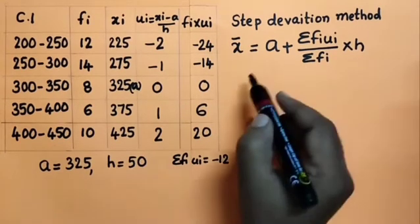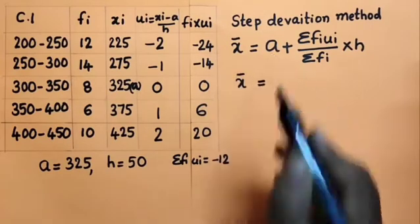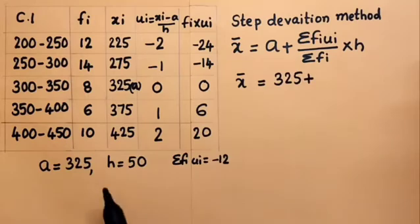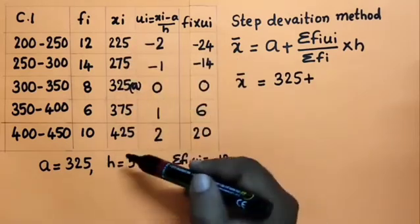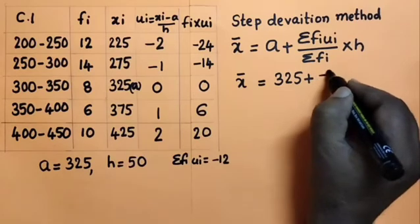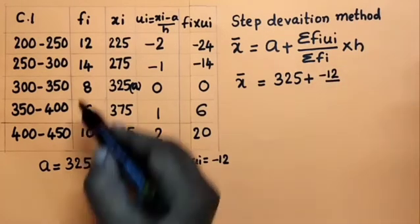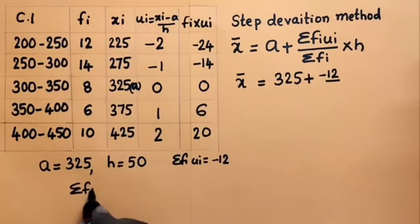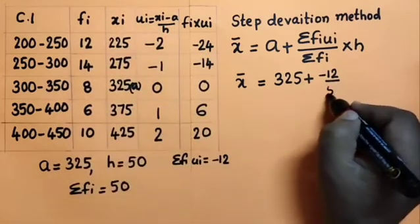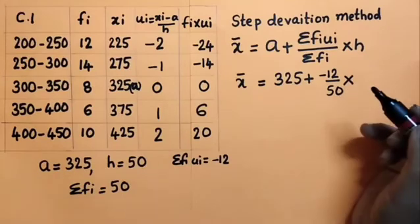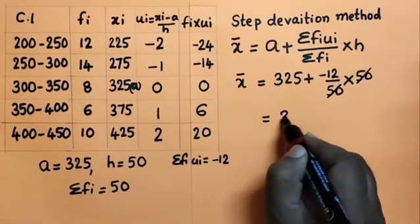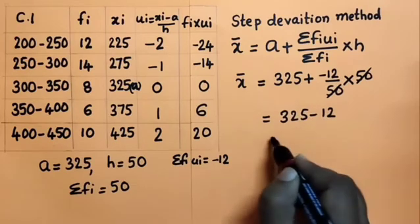Now substituting into the formula: x̄ = a + (Σfiui / Σfi) × h. Here a = 325 (assumed mean), Σfiui = −12, Σfi = 50, and h = 50. So x̄ = 325 + (−12 / 50) × 50. The 50s cancel, giving x̄ = 325 + (−12) = 325 − 12 = 313.